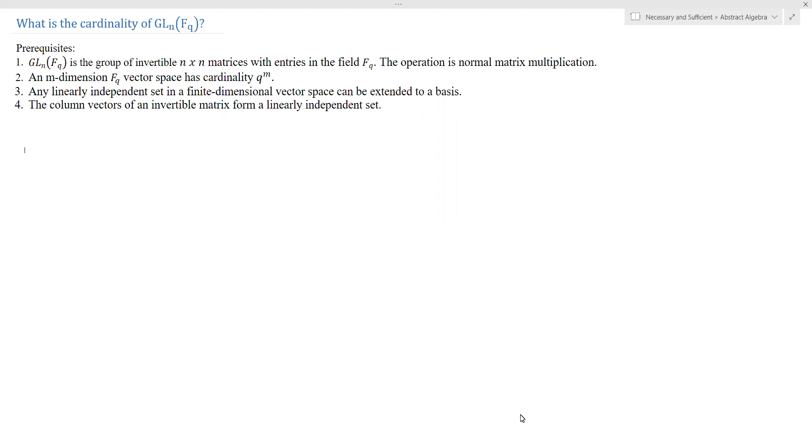So on the surface, this looks like it might be a group theoretic question. And while I'm sure there does exist a proof that is more heavy on the group theory, the proof we'll be giving today focuses a lot more on the linear algebra approach. In a future video, we will be computing the cardinality of the special linear group over FQ, and that one definitely is on the more group theoretic side.